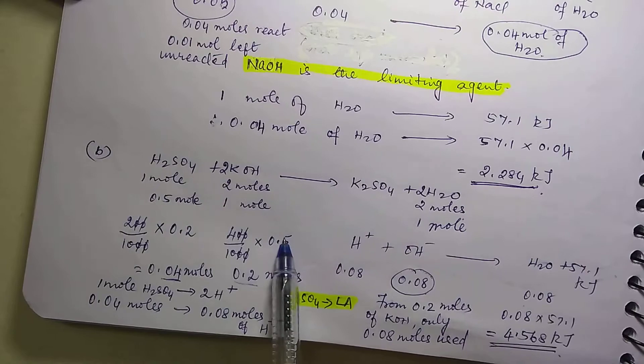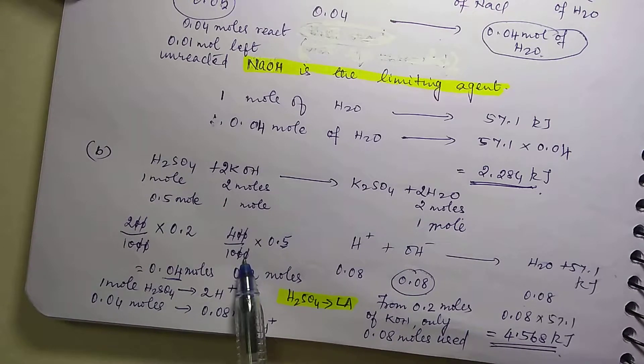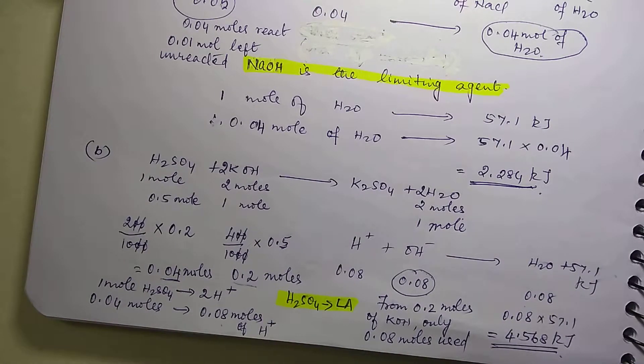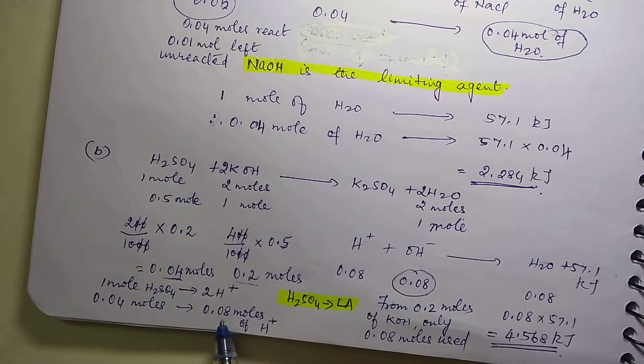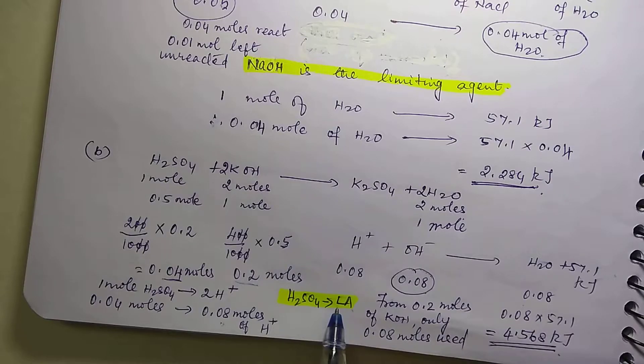Now on the other side, you are having KOH 0.2 moles only. So this is 0.08 and this is 0.2. Now in this case, which is the limiting agent? Which is less out of 0.08 and 0.2? Obviously 0.08 is less. So whichever is less, that is the limiting agent. So H2SO4 is the limiting agent.